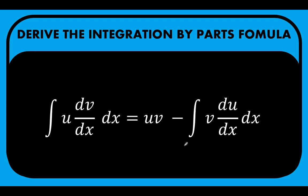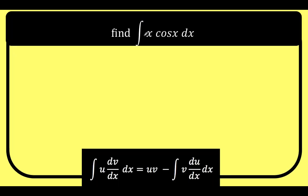Let's apply this formula to our problem. We need to identify u, dv/dx, v, and du/dx. We have two functions: x and cosine of x. Technically, we can choose either function to be u, and the other will be dv/dx. But we need to be careful in choosing u — the guideline is to choose u so that the resulting integral is simpler than the original integral.